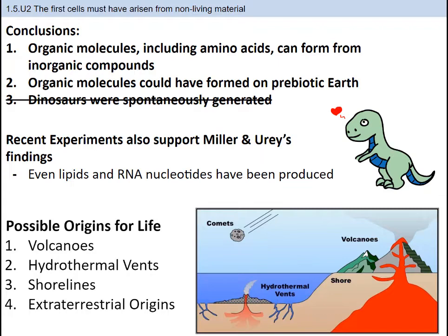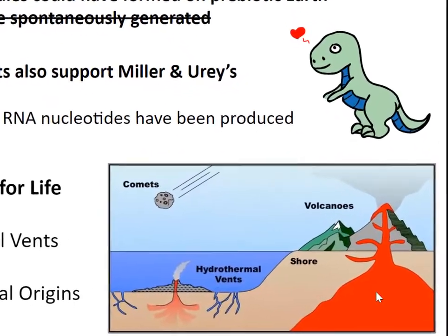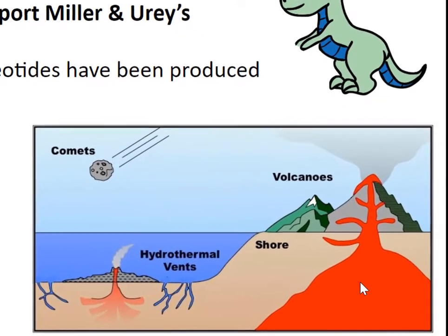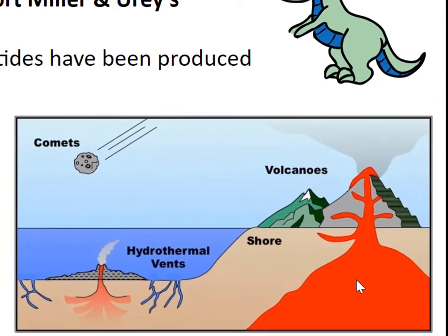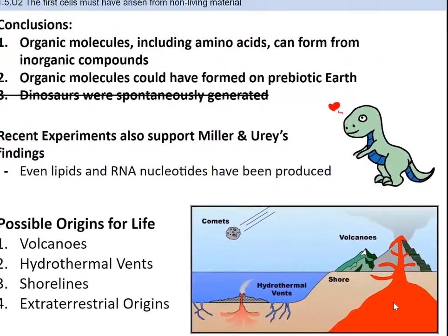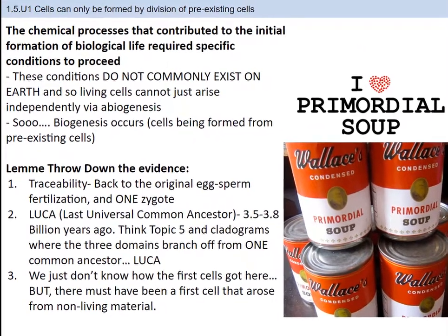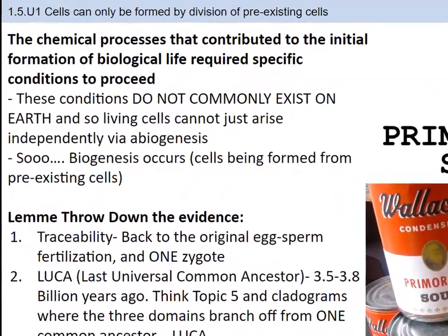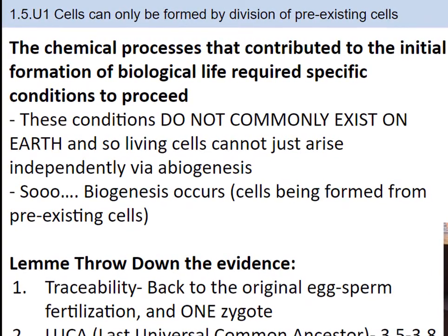But here's the major catch. Earth as we know it today was not Earth that existed 4 billion years ago. Conditions were different, and on Earth today we really don't have those conditions. Scientists have postulated that on prebiotic Earth, places with really extreme conditions — like volcanoes, hydrothermal vents, shorelines with fluctuating wet and dry conditions, as well as comets carrying some life form — may have played a role. Scientists don't really know, as most of the primitive Earth has been recycled and melted back via tectonic plate action. The chemical processes that led to the initial formation of biological life required specific conditions, and these do not commonly exist on Earth today. So living cells cannot just arise independently via abiogenesis.